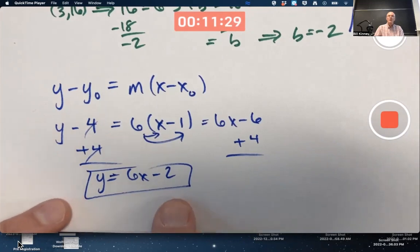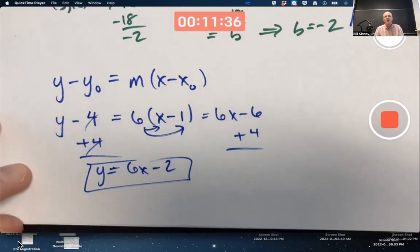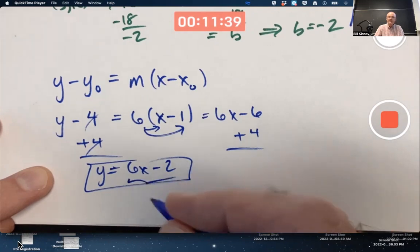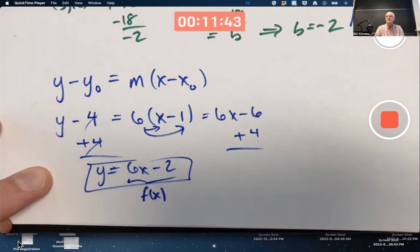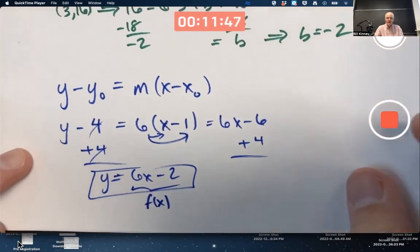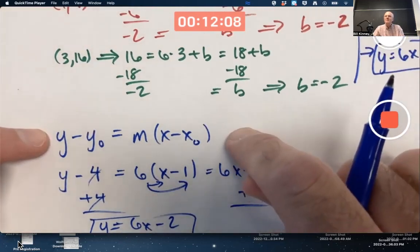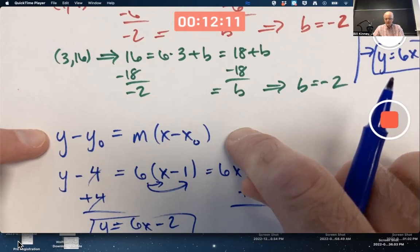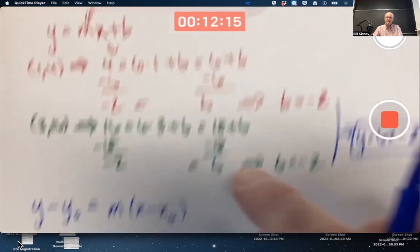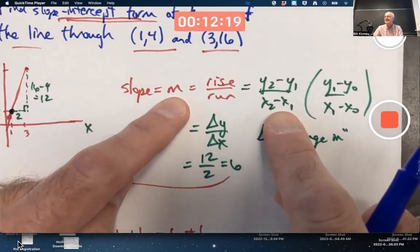The slope intercept form, we typically think of as being the nicest form, in large part because it's what you might call the function form. I could think of this as being a function, f of x. When I don't have y solved for, when the equation is like this, this thing is not f of x yet. I have to add 4 to both sides to get the function whose graph is the straight line.